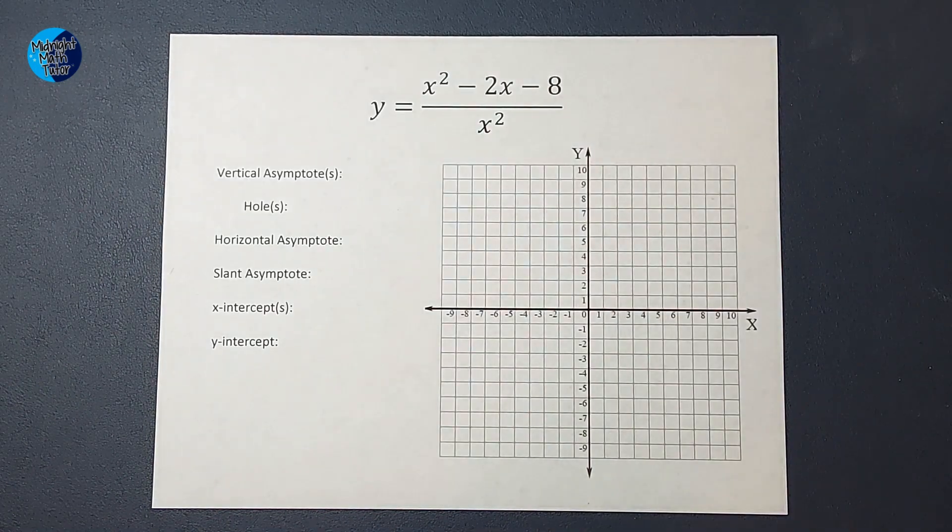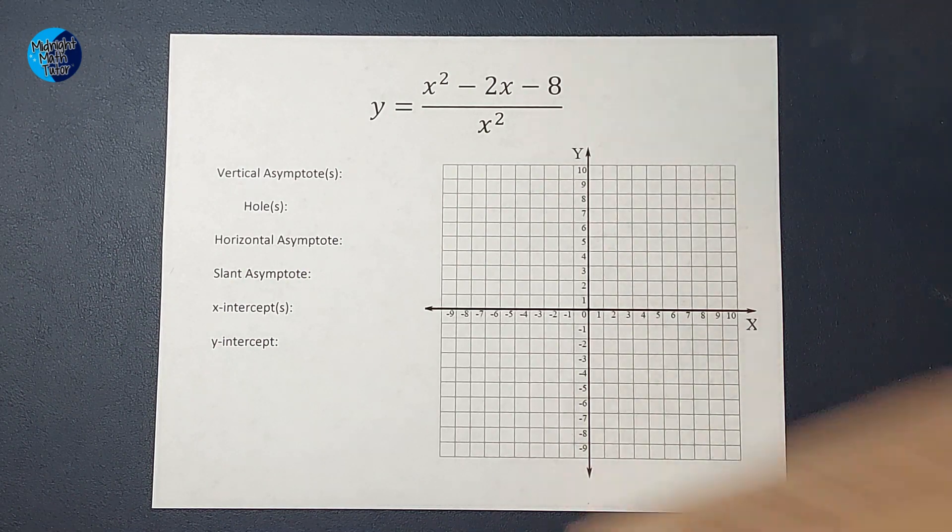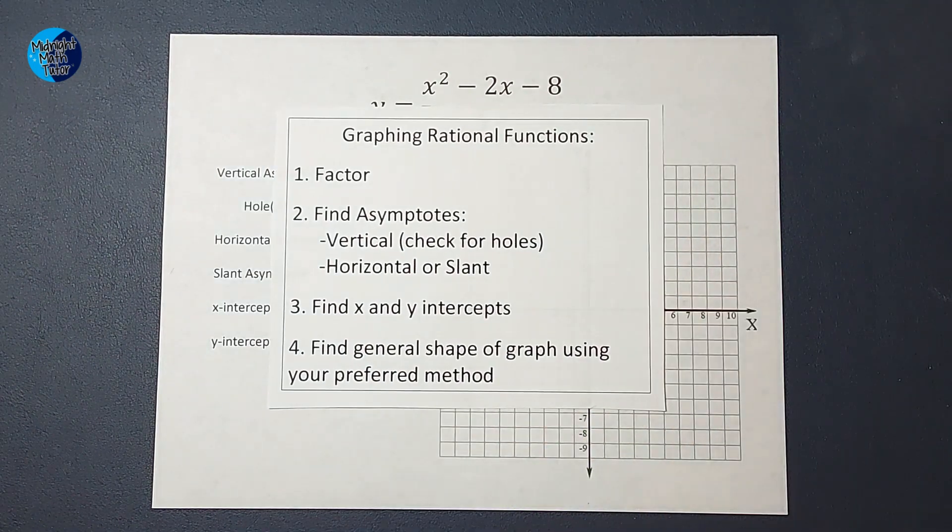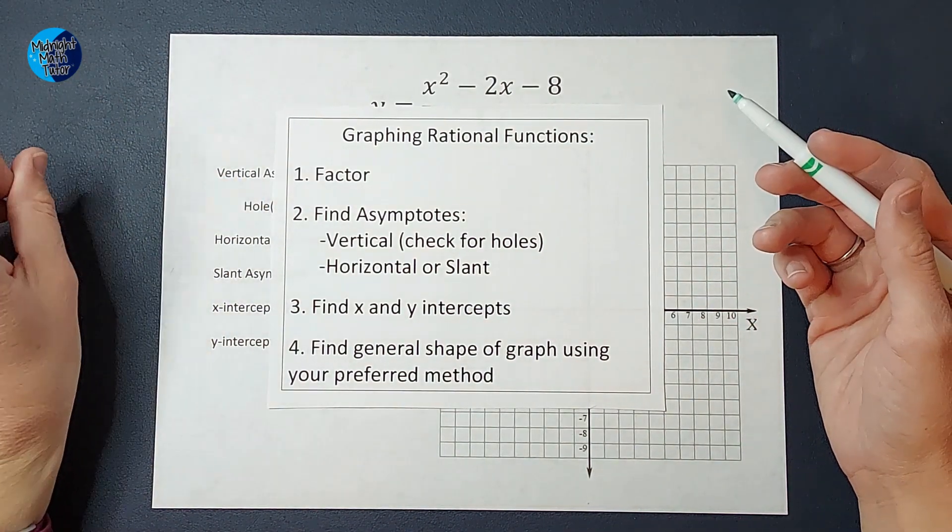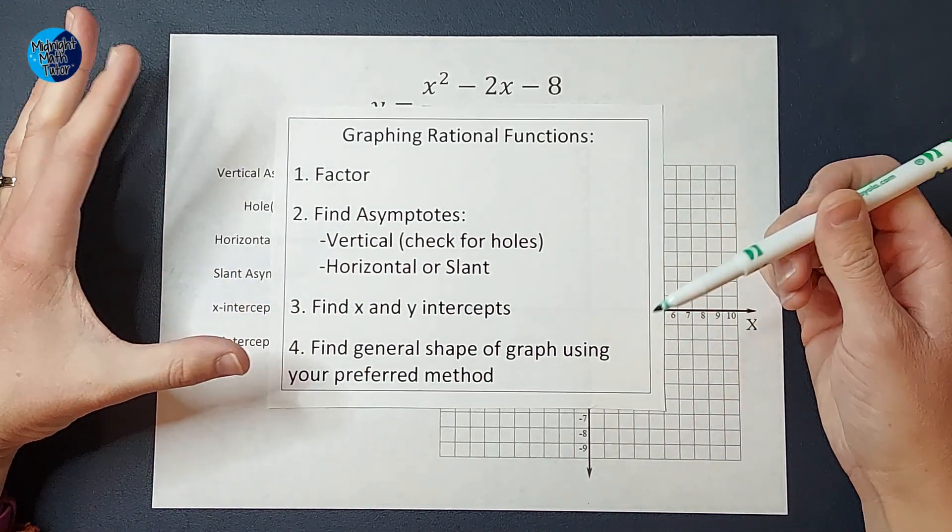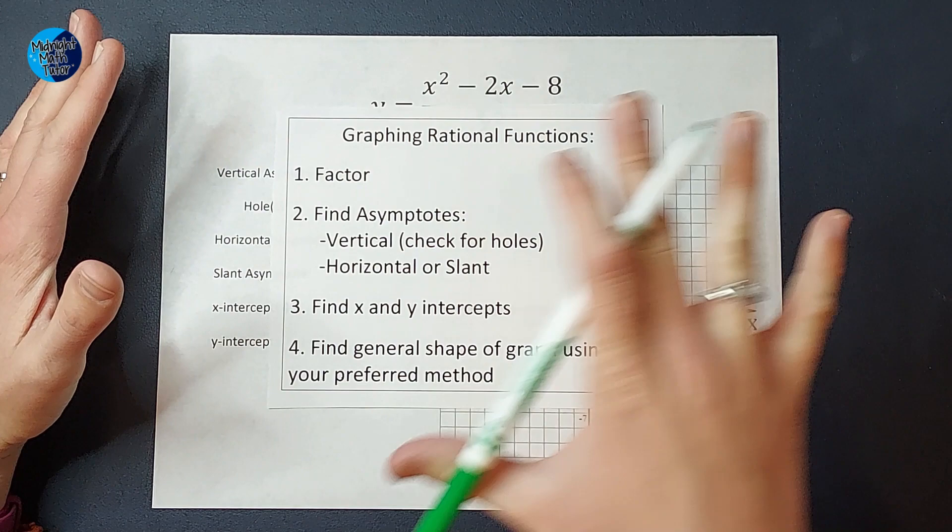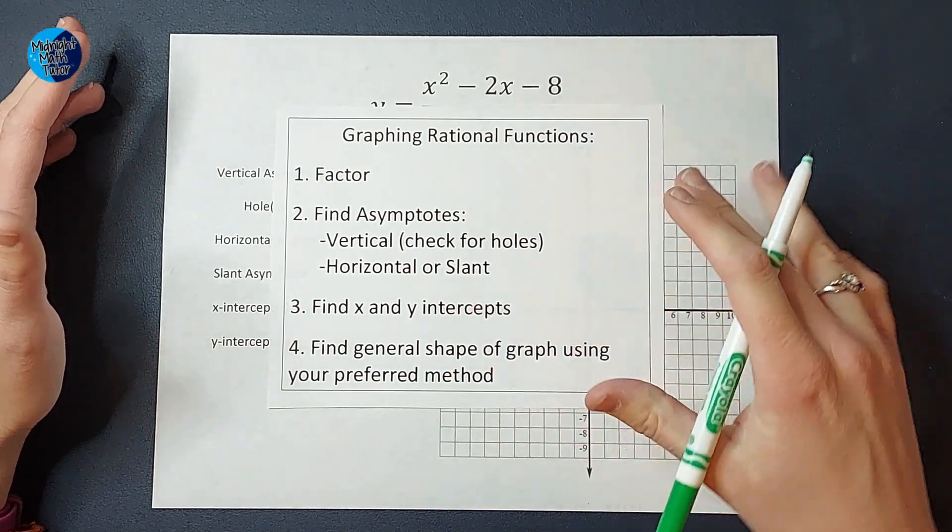All right, so when we do these, like I said, we follow some very specific steps and guess what? I'm going to show them to you. First, we're going to factor. Then we are going to find our asymptotes, vertical and horizontal or slant, and we're going to check for holes. Then we're going to find our x and y intercepts, and then we're going to figure out the general shape of our graph using our preferred method, which we'll talk about once we get there.